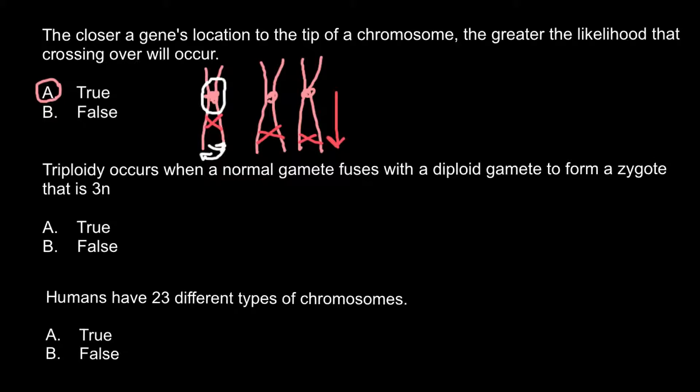Next question: triploidy occurs when a normal gamete fuses with a diploid gamete to form a zygote that is triploid. Is it true or false? This is also true.